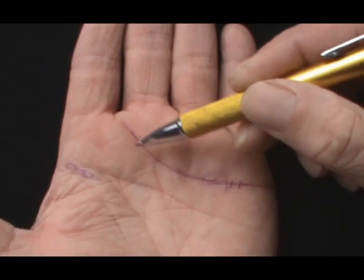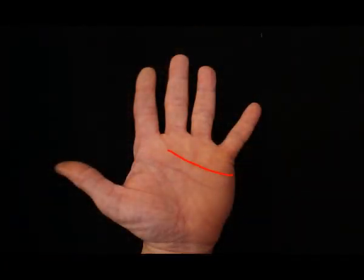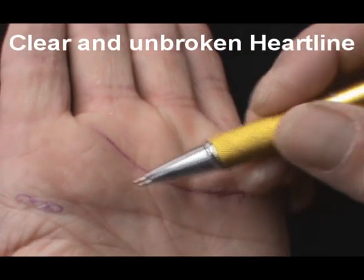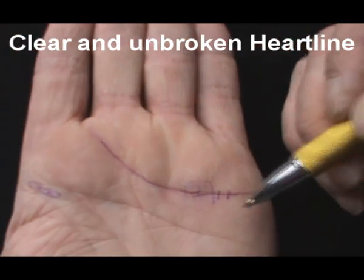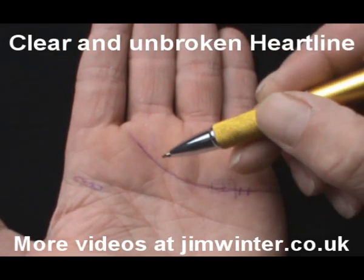A curved or rounded heart line can be warmer than a straight one. If it is deep and clear and unbroken, this is a good sign of handling emotional depths well as the current will be steadfast within its channel.